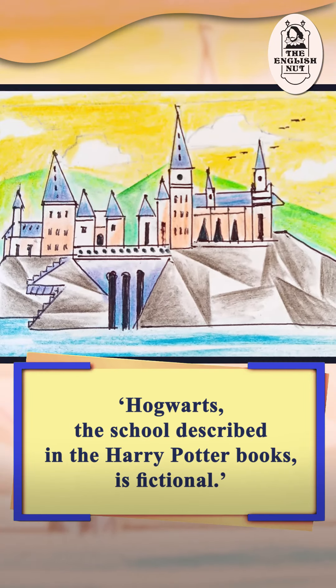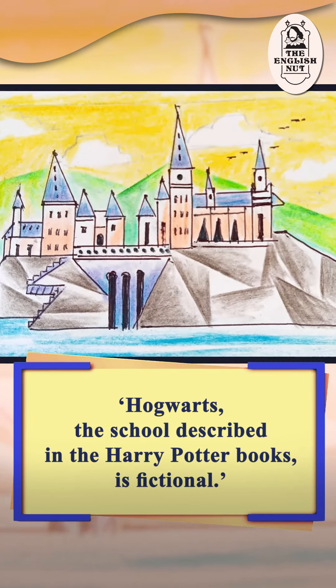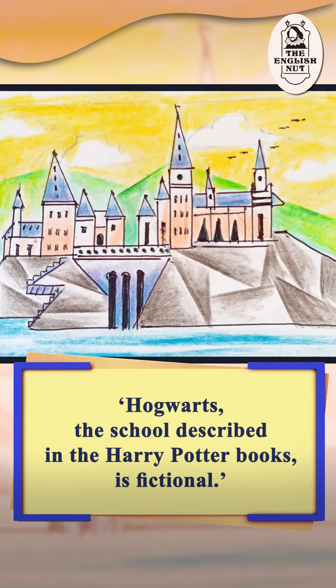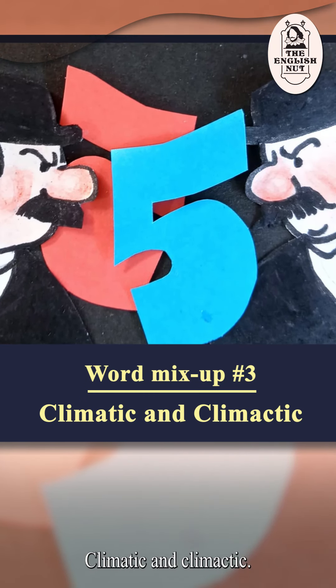Here's another example: Hogwarts, the school described in the Harry Potter books, is fictional. Fictitious refers to something fake — it has a whiff of trickery to it. For example, a criminal could open a bank account under a fictitious name. She used a fictitious illness to bunk school. The actor gave a fictitious date of birth to his fans.